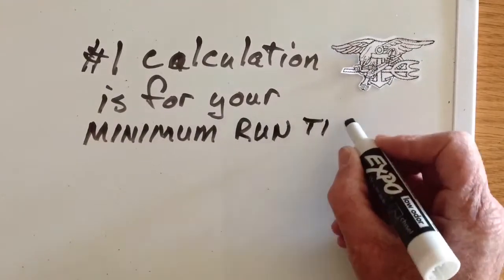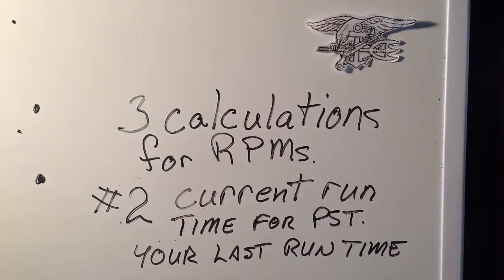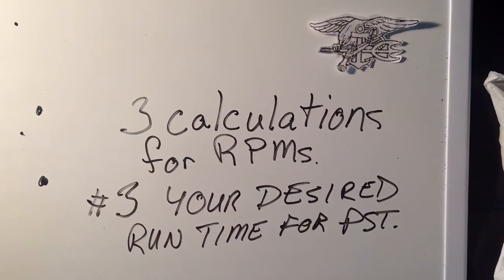You're going to calculate three different times for your PST. The first is your minimum PST score — the baseline you need just to pass. That's the real confidence builder. The second is your current run time, whatever you're running at now, so you know your current RPMs. The third is your desired RPM for your desired future PST time. We'll calculate the minimum first, then you do the same for current pace and your goal pace.